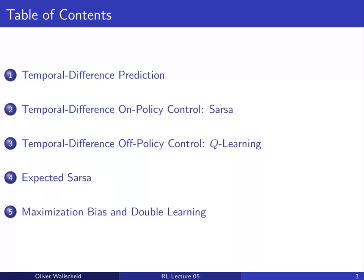The agenda for this lecture is structured as follows. We start with a prediction task using temporal difference. For control, we separate our analysis into on-policy control called SARSA, and off-policy control called Q-learning. Then expected SARSA is discussed as a useful extension, and finally we handle the so-called maximization bias, which we try to solve with the double learning approach.